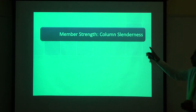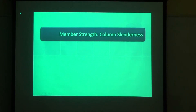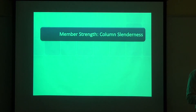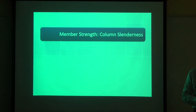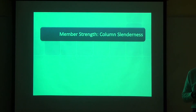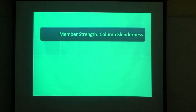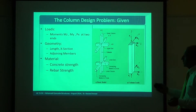First of all, we tackle the column length and slenderness issue — length and bracing will be tackled together. Because of the other issues, you have already done the cross-section geometry and material. You already have an equation that can handle every cross-section and every material. So now let's concentrate on the issue of slenderness, which is a combination of loading, length, and framing together — all three factors combined.